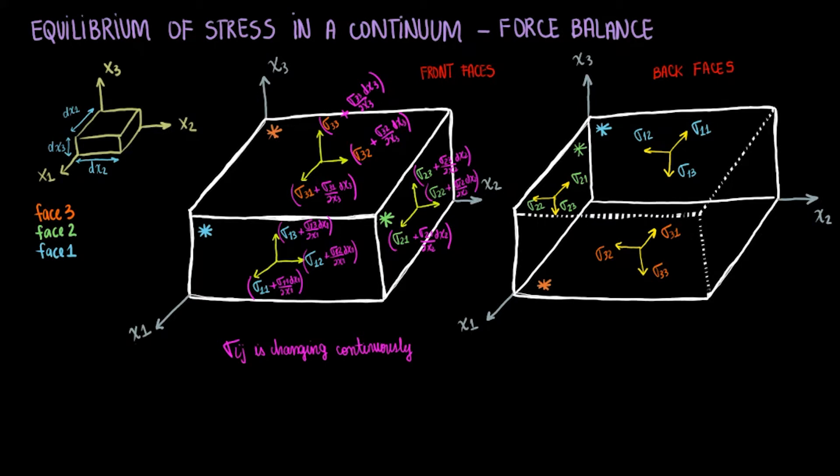Okay, so we are considering the stress to be changing continuously. Thus, Taylor's theorem would tell us that the stress at x1 plus dx1 is sigma 1 1, where sigma 1 1 at x1 plus dx1 comma x2 x3 equals sigma 1 1 at x1 comma x2 comma x3 plus delta sigma 1 1 over delta x1 at x1 comma x2 comma x3 times dx1. The same goes for the other components and faces.